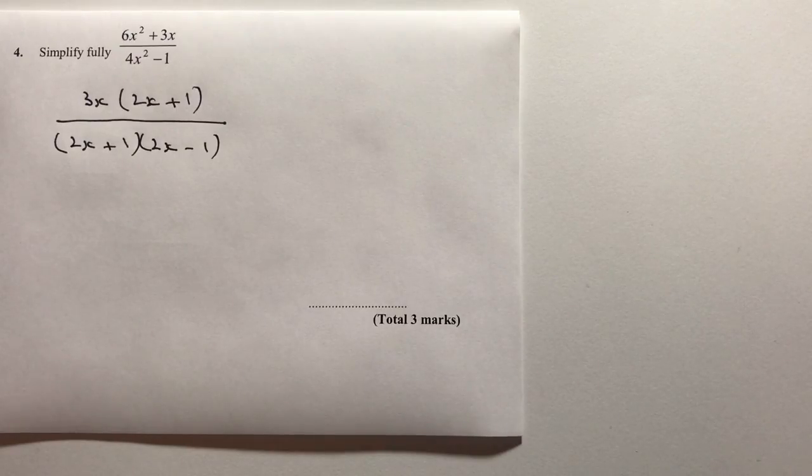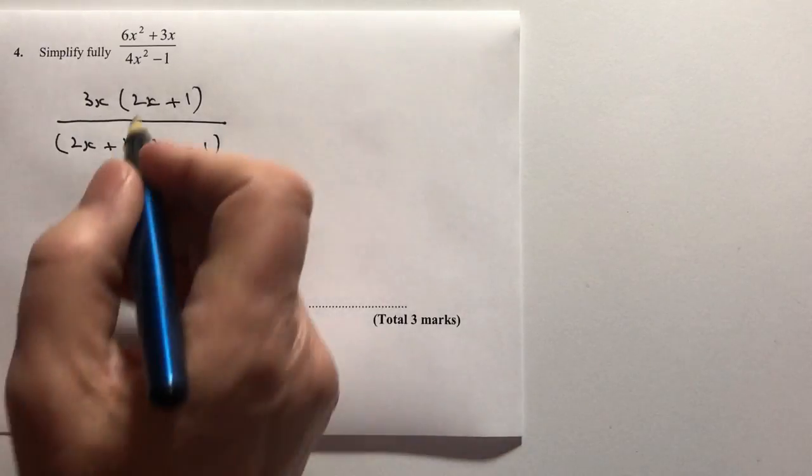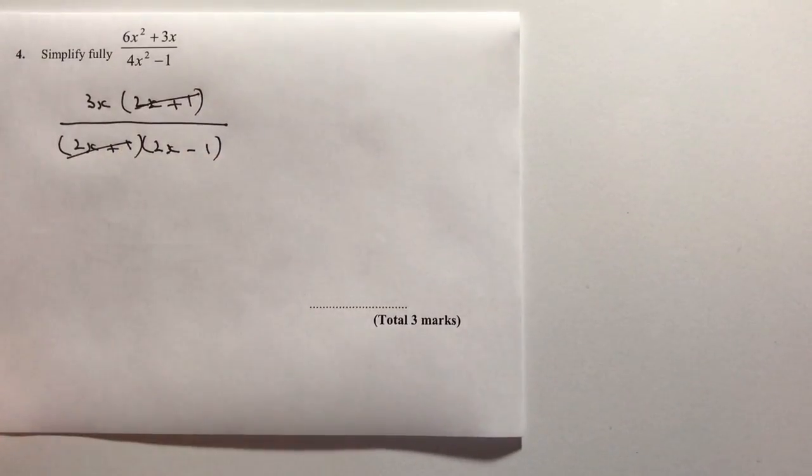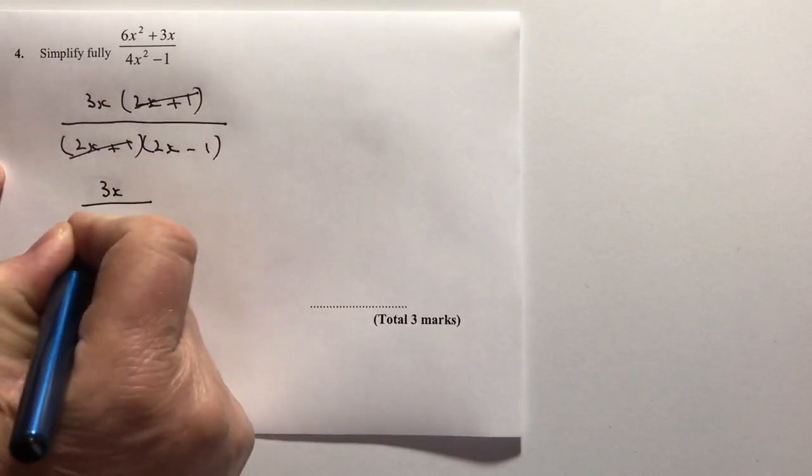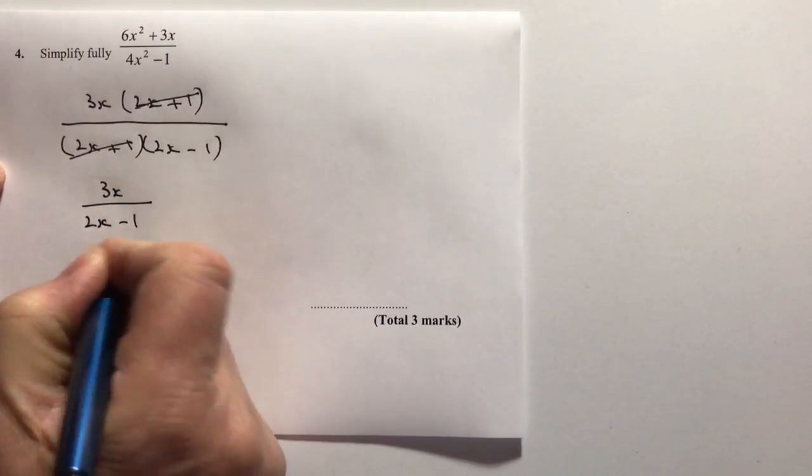I'm in a position now that I can divide through by 2x plus 1 and simplify this expression as 3x divided by 2x minus 1.